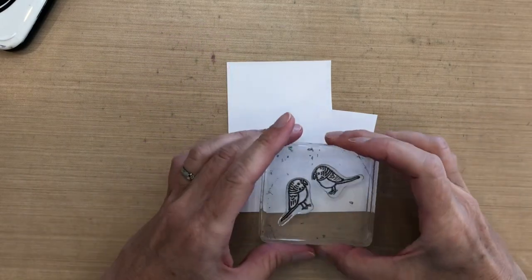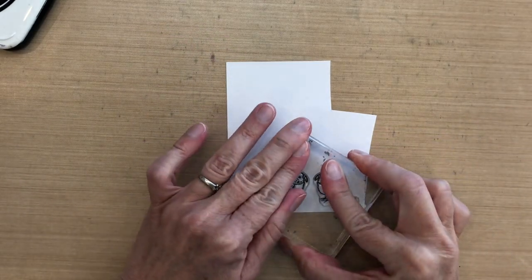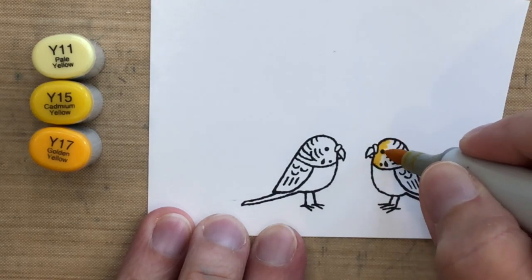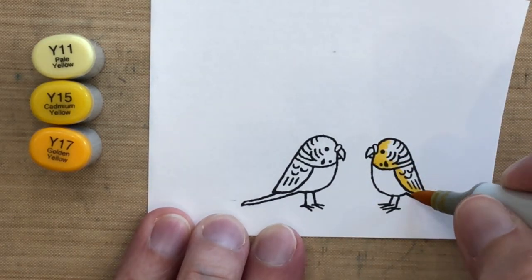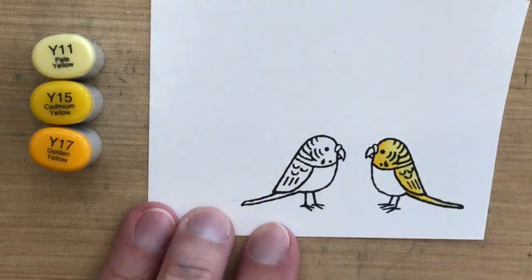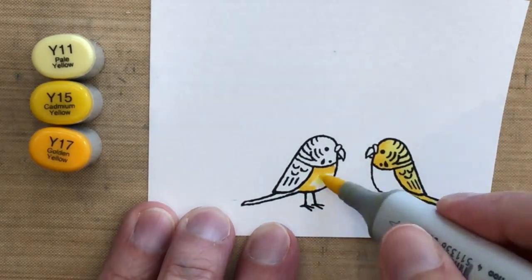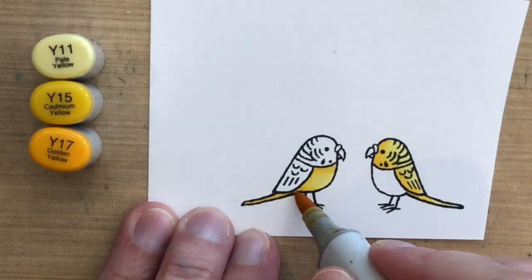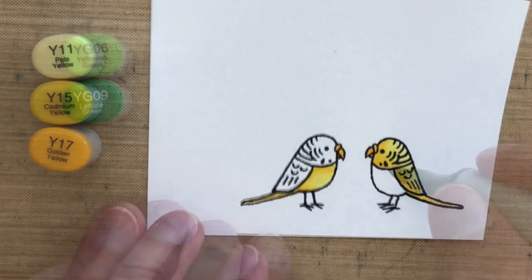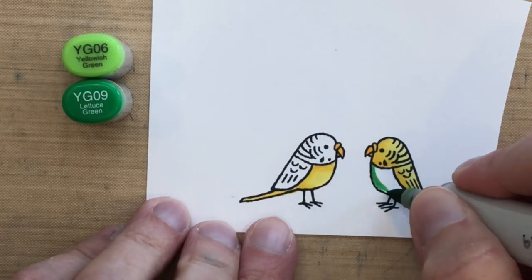I'm going to stamp my birds with Memento Tuxedo Black ink onto Neenah Solar White cardstock. It's nice that this set comes with two birds that face each other. I'm going to make them common with yellow, so I'm going to do the top of this right bird with Y11 and Y15, and then the bottom of the other one with Y11 and Y15, and their beaks are going to be Y17.